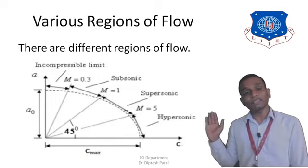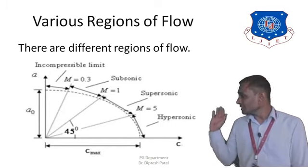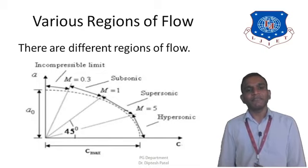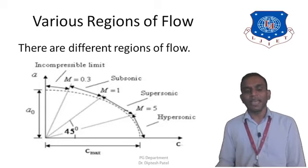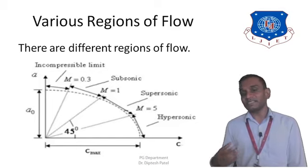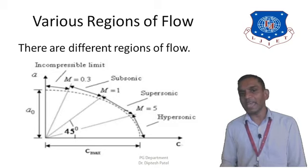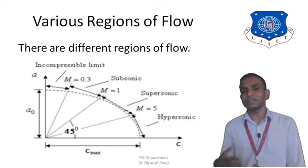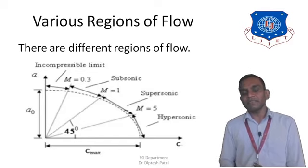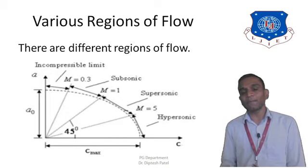Let's begin with the incompressible flow region. In incompressible flow, the velocity of the fluid is very small compared to the velocity of sound, and therefore the Mach number is below 0.3. Since the velocity of fluid is very small, and Mach number is the ratio of fluid velocity to sound velocity, the fluid velocity is much smaller than the sound velocity, and that's why it falls in the incompressible flow regime.